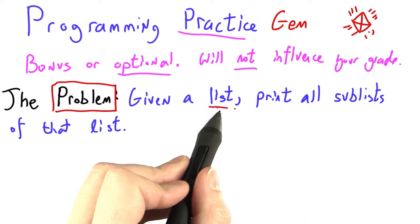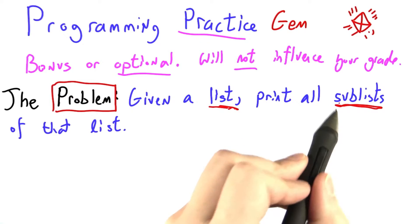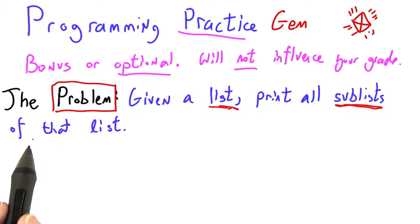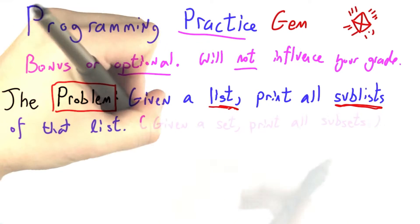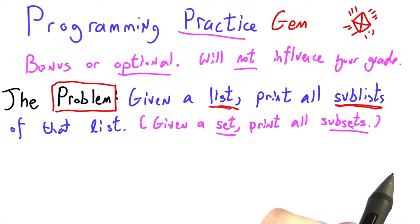Today's problem: given a list, could be empty, could be arbitrarily long, print all sublists of that list. I'll give an example of what this means in just a second. If you prefer a more mathy explanation, for us this is the same problem as given a set, print all the subsets.